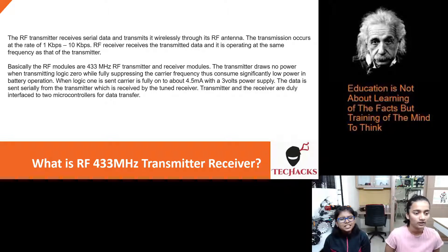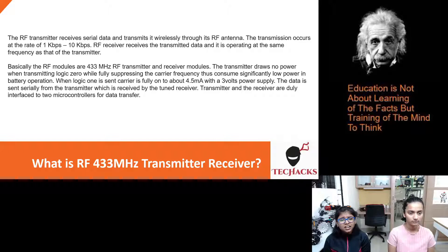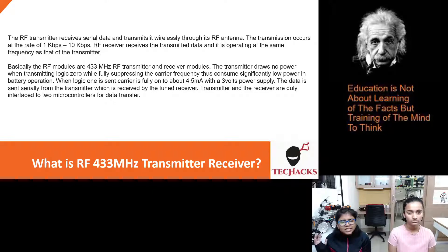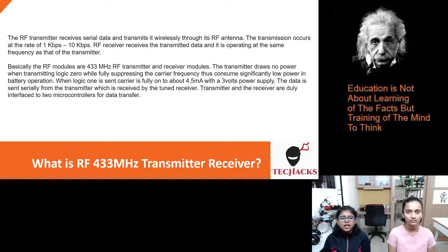Basically, the radio frequency modules are 433 MHz RF transmitter and receiver modules. The transmitter draws no power when transmitting logic 0, while fully suppressing the carrier frequency, thus consuming significantly low power in battery operations. When logic 1 is sent, the carrier is fully on at about 4.5 mA with a 3V power supply.